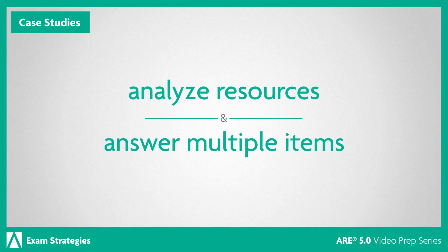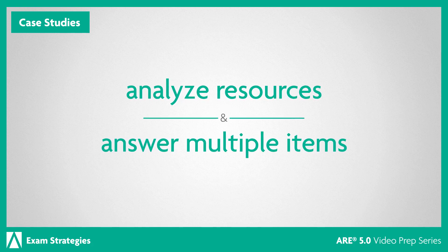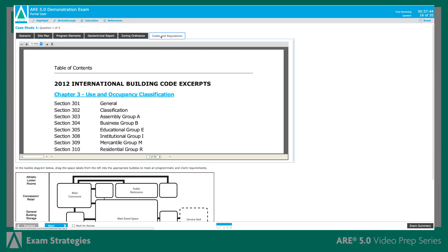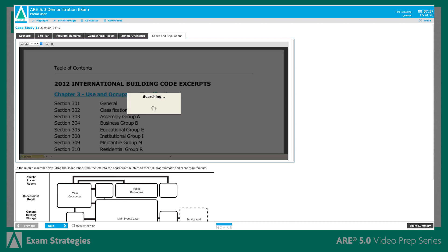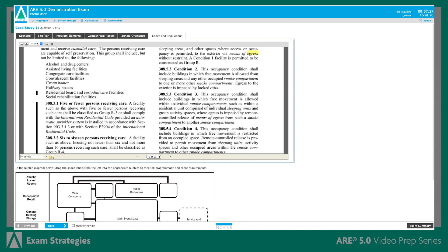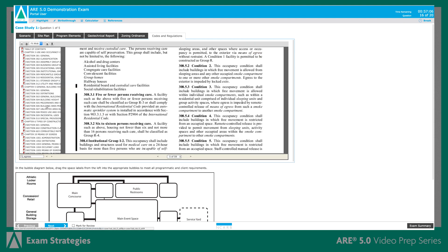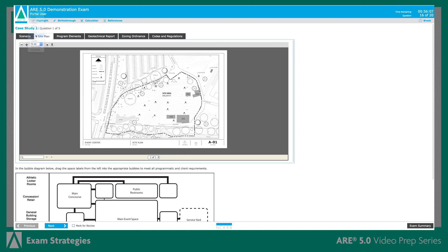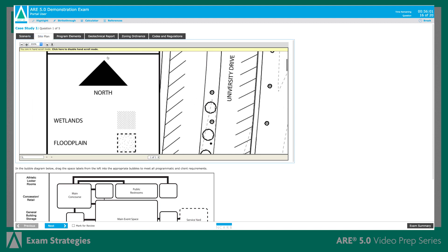Remember, the provided resources will need to be analyzed and evaluated in order to determine the correct responses. The resources for each case study are displayed as PDFs, and there are several tools you can use to make navigating resources easier. These include a keyword search function, which allows you to type a word and navigate to specific areas rather than scrolling through the document. The bookmark and table of contents tools help you navigate through longer resources more efficiently, and the zoom and pan functions enable you to see the resources in detail.